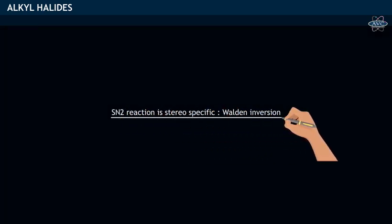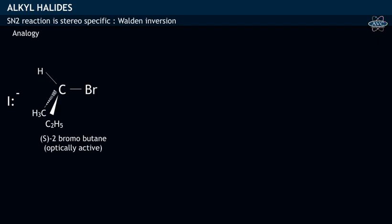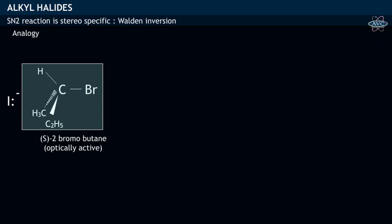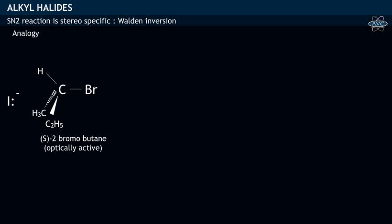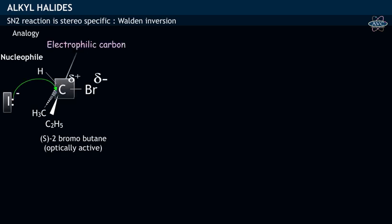Stereochemistry of SN2 Reaction. Let us consider the reaction between optically active compound S-2-bromobutane, with iodide ion I⁻ of sodium iodide. In the SN2 reaction, the nucleophile iodide ion attacks the electrophilic carbon bearing the bromine group of S-2-bromobutane.